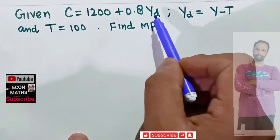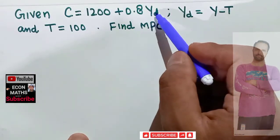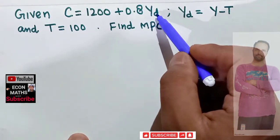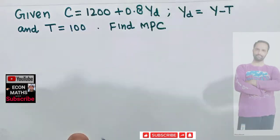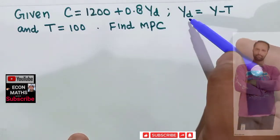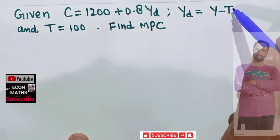This Y subscript d denotes our disposable income. C denotes the consumption function. Disposable income is equal to our total income minus tax. Here this tax is autonomous, it does not depend upon the level of income.